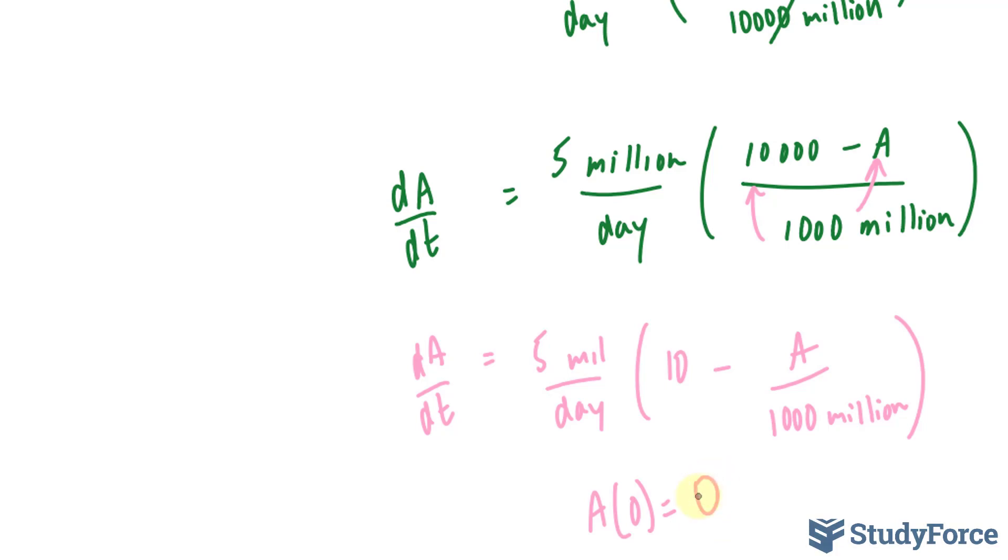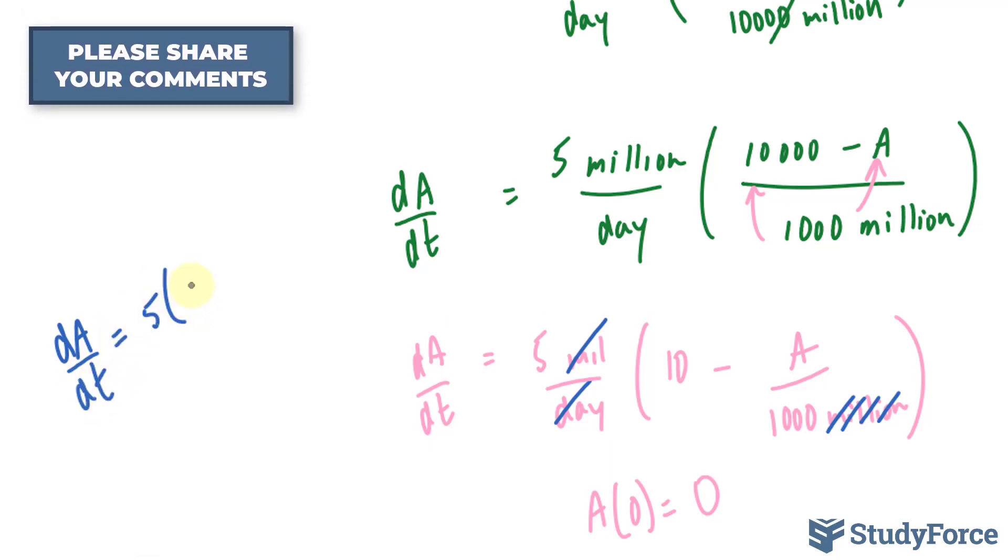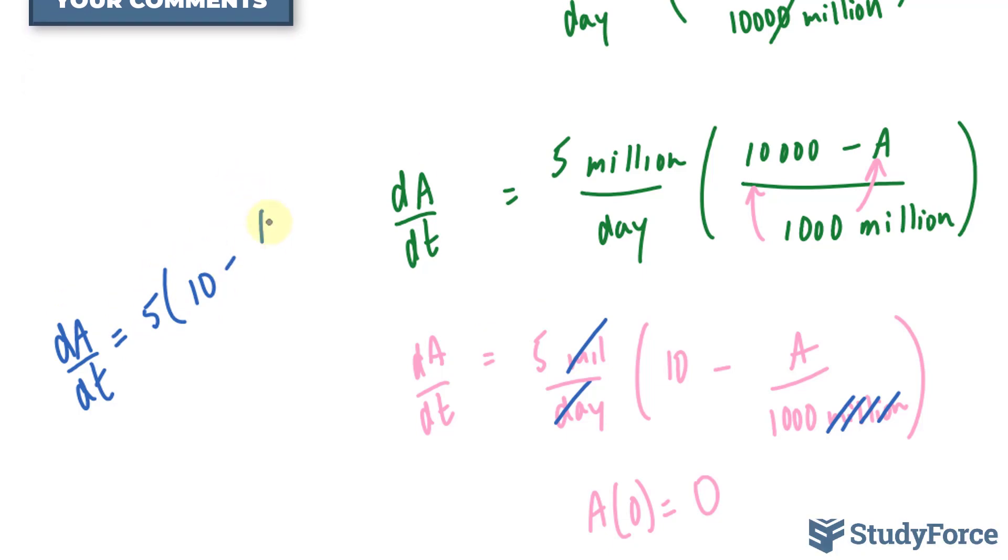You would then find your C, substitute it back into your general equation that contained the constant, and you're done. And also, another pointer for you, you don't need to write down million while you do that, or million here and per day. Just pretend that it's not there and work with this particular equation the way it is. In other words, you would work with dA over dt is equal to 5 times 10 minus A over 1,000.